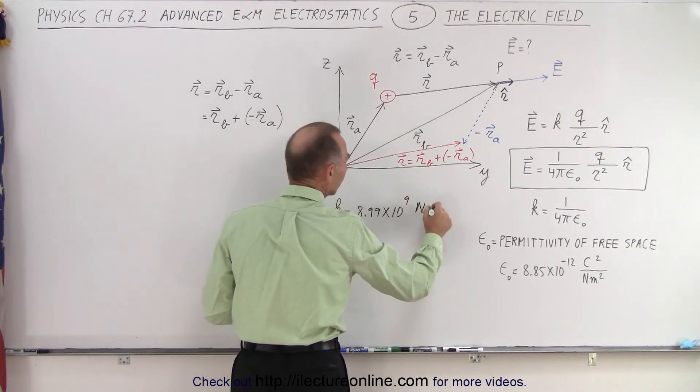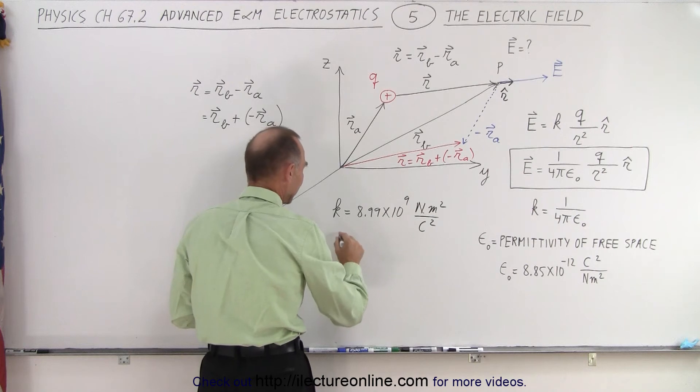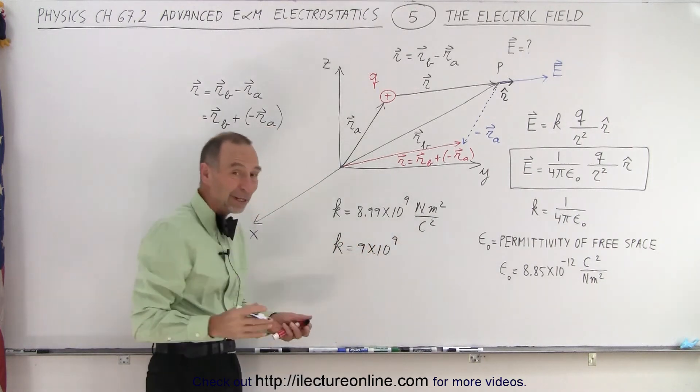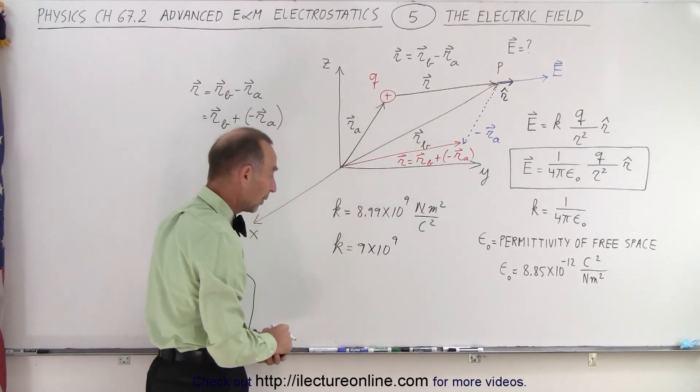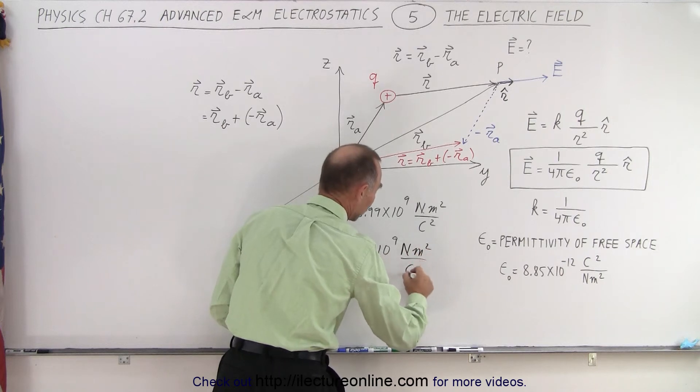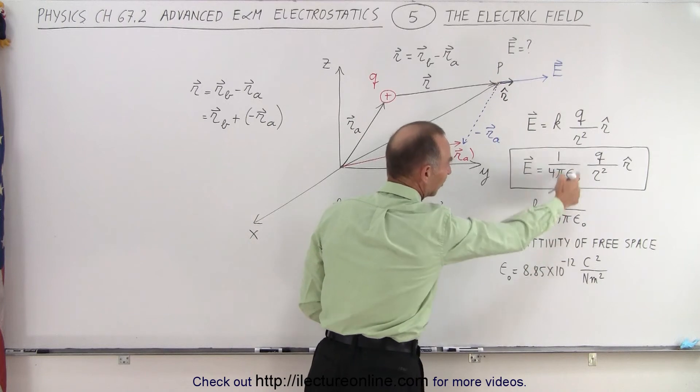I typically round it off to k equals 9 times 10 to the ninth. Notice how the numbers make it really easy, and who cares about the 0.01 Newton meter squared per coulomb squared—that's basically in the noise. I really like to use this instead of using this.